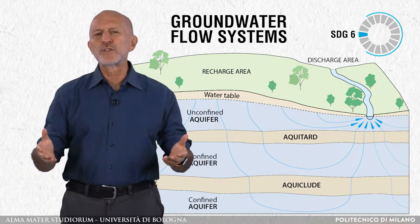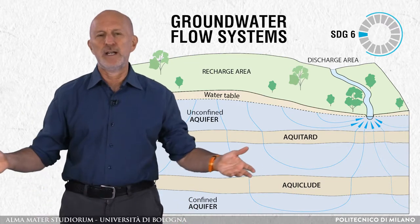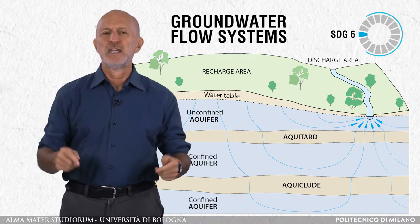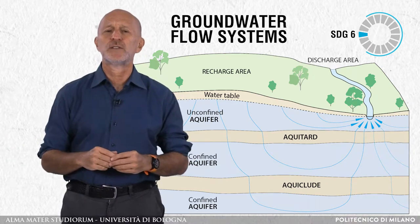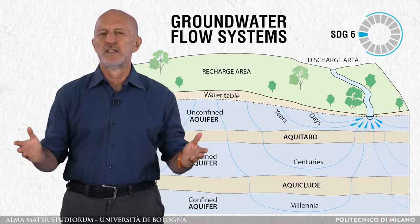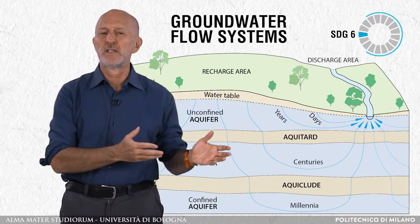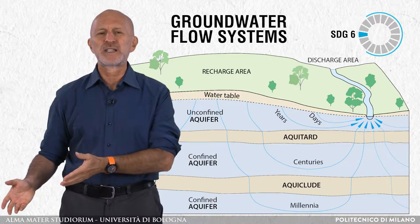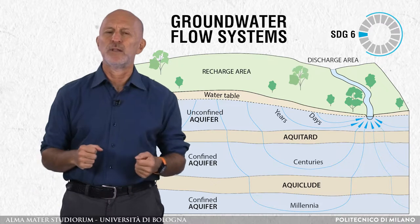Groundwater flows below our feet almost everywhere at a variety of depths, inside the shallowest portion of the continental crust, and with a variety of rates — from meters per second in karst, down to meters per several millennia in poorly permeable formations.